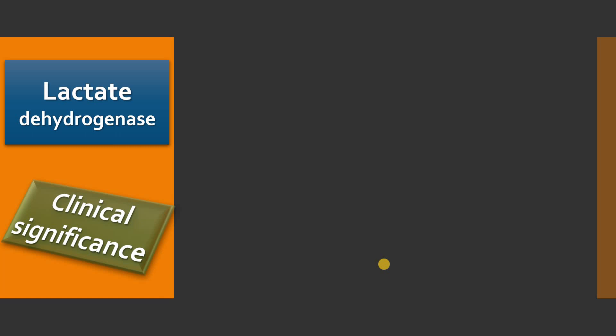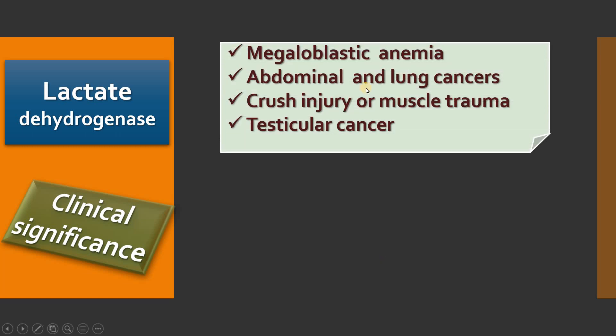Coming to clinical significance — since LDH is widely distributed, its level is elevated in many diseases. Since it is present in WBCs and RBCs, gross elevation of LDH can be seen in megaloblastic anemia. It is also elevated in many cancers like testicular cancer, lung cancer, pancreatic tumors, and other abdominal cancers. Since LDH5 is predominantly present in muscles, any crush injury or muscle trauma will cause elevation of LDH5.